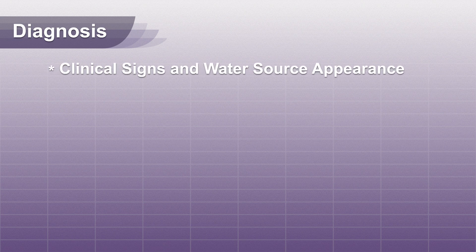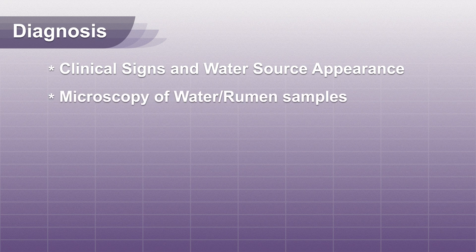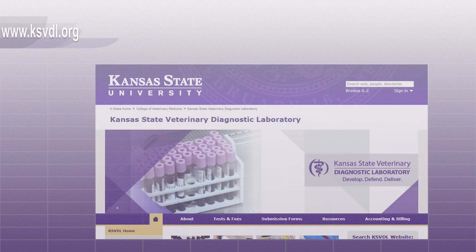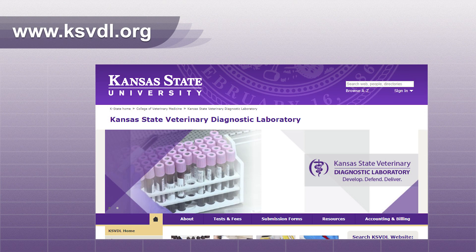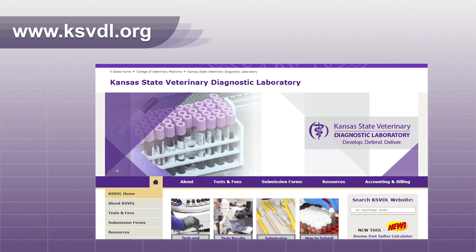Diagnosis: A presumptive diagnosis can be made from clinical signs and water source appearance. Microscopy of water and rumen samples can confirm. Histopathology on liver samples can also be confirmatory. KSVDL offers histopathology and microscopy to aid in your diagnosis and management of this disease.